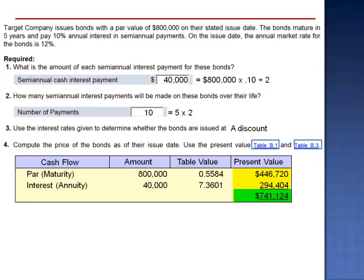These bonds will sell for $741,124. This amount is consistent with our prediction that the bonds will sell at a discount.